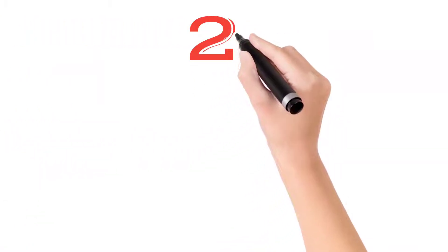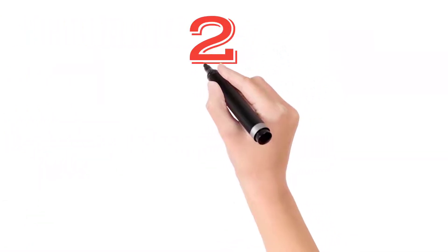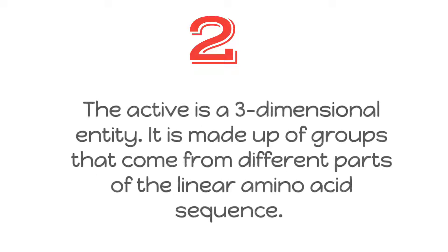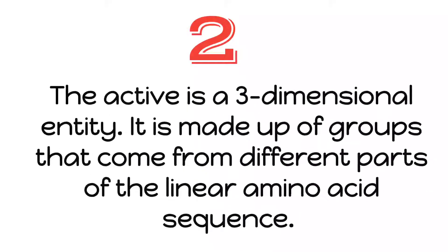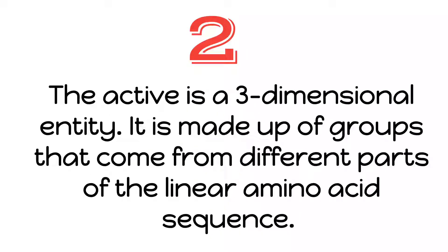The next property is that the active site is a three-dimensional entity. It is not a point, not a linear line — it is a three-dimensional entity. It is made of groups that come from different parts of the linear amino acid sequence converging to one point, making it a three-dimensional structure.